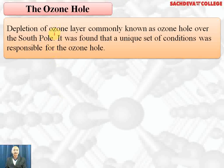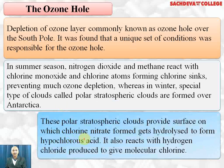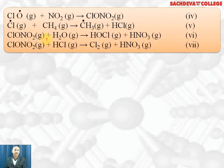The ozone hole near Antarctica has been created. Depletion of the ozone layer, commonly known as the ozone hole, is over the south pole. A unique set of conditions at Antarctica are responsible for the ozone hole. In summer, nitrogen dioxide and methane react with chlorine monoxide and chlorine atoms forming chlorine sinks — the chlorine radicals are depleted and do not cause ozone depletion. In winter, special polar stratospheric clouds form over Antarctica and provide a surface for chlorine nitrate to be formed. Chlorine nitrate gets hydrolyzed on their surface to form hypochlorous acid (HOCl), and HOCl decomposes to form OH free radical and Cl free radical, stopping depletion.